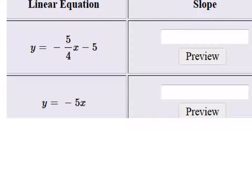The slope for this first equation on the top is negative 5/4. It's just the number being multiplied by x.